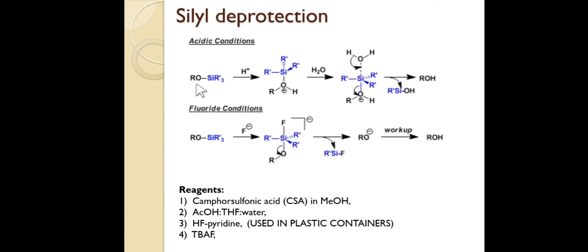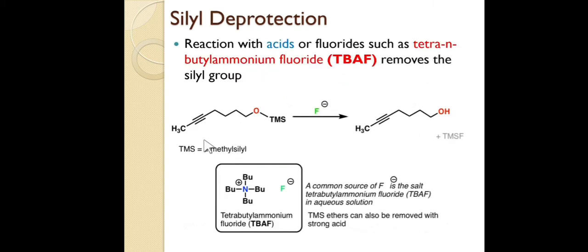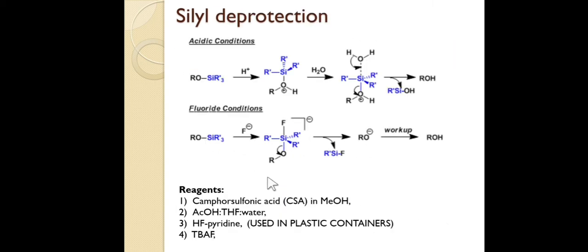In acid deprotection, the oxygen of the alcohol is protonated first, and then a water molecule attacks on silicon, releasing the free alcohol — the silyl-deprotected product. In fluoride deprotection, F⁻ attacks directly on silicon due to its strong affinity, generating an alkoxide (RO⁻). During workup, the alkoxide abstracts a proton from the solvent to give the free alcohol ROH.